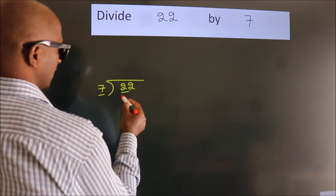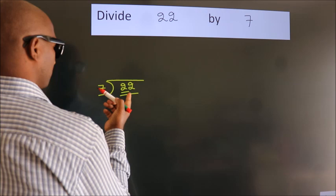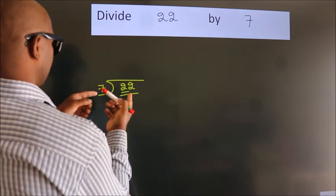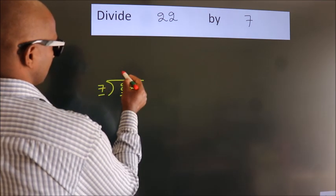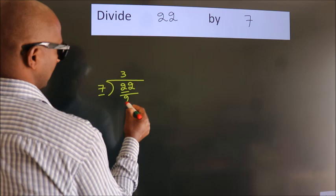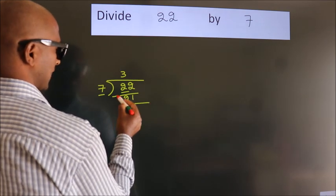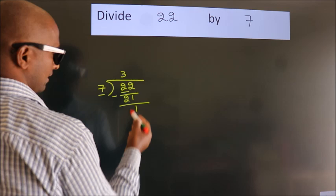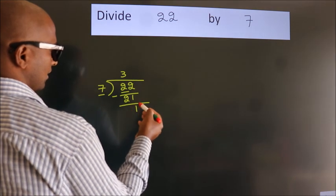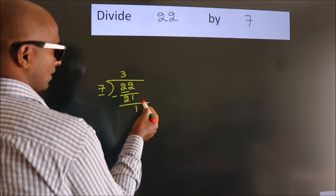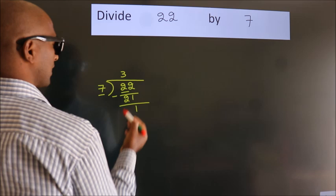So we should take two numbers: 22. A number close to 22 in the seven table is seven threes, 21. Now we subtract and get 1. After this, no more numbers to bring down, so what we do